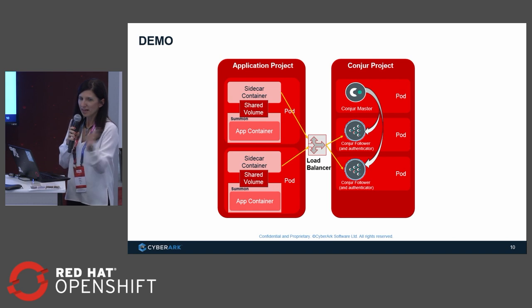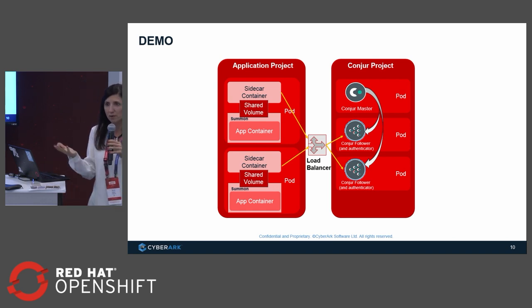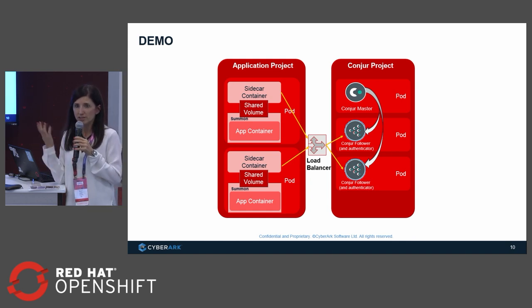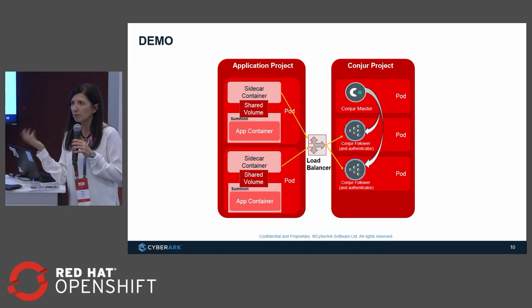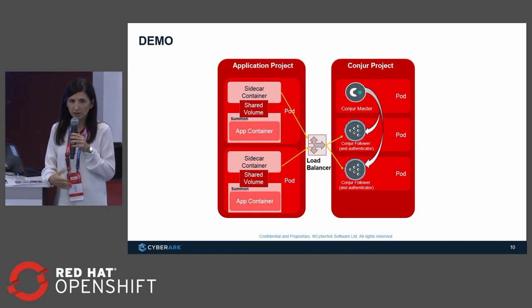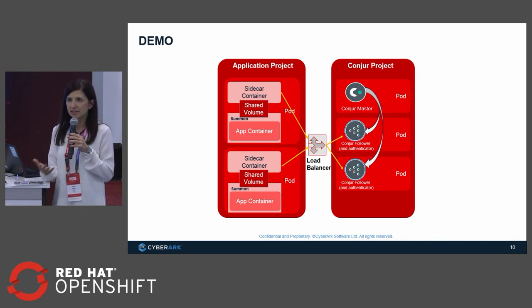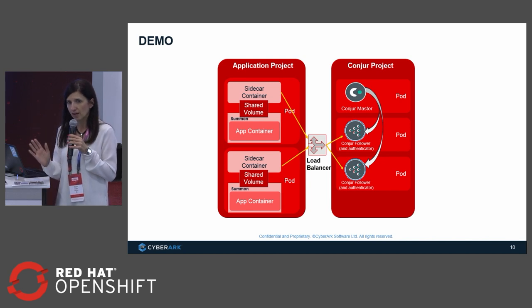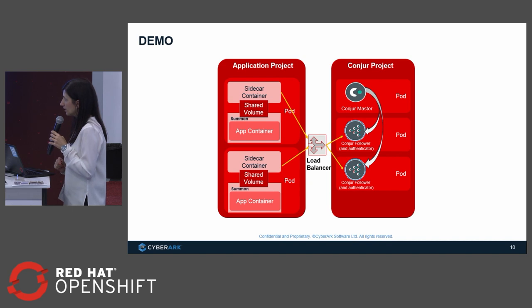The last part I'll describe: if you run your application in a third pod that was not defined in the policy — where we defined which applications are allowed to get secrets — and that pod is unauthorized, it will fail and will not be able to get the secrets. Only authenticated and predefined applications can access them.